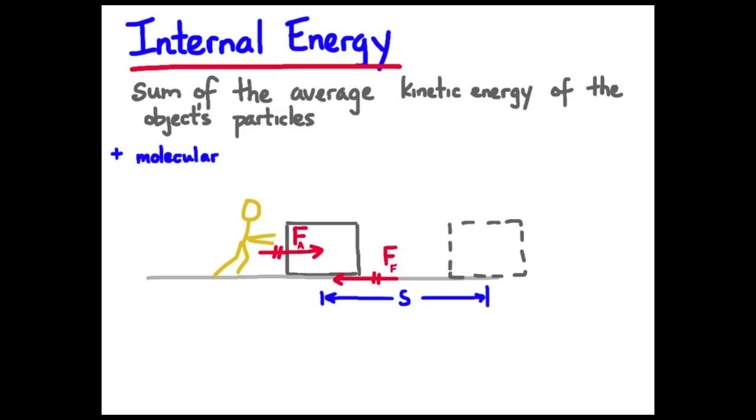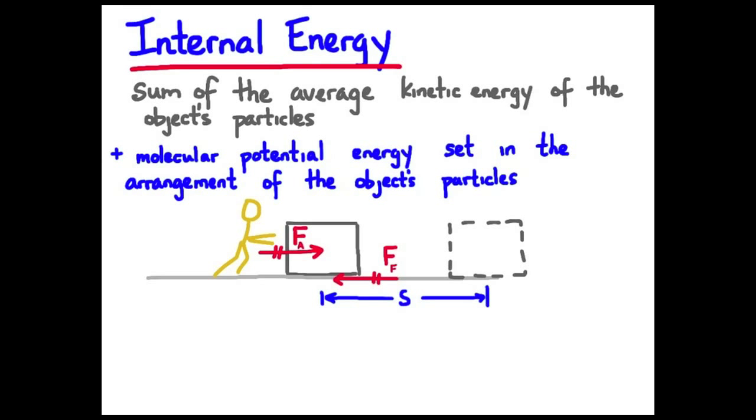So, the internal energy of the box is the sum of the average kinetic energy of the box's particles. And we have to add on the molecular potential energy, and that has to do with the arrangement of the particles that make up the box.